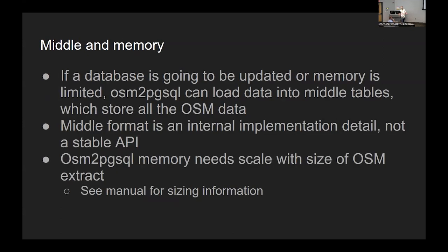This is a lightning talk, so briefly: there's a part of OSM2PGSQL called the middle, which is where temporary data is stored. It's an internal implementation detail that's actually changing fairly soon. OSM2PGSQL memory needs to scale with the size of OSM extract. You're dealing with outputting a couple hundred gigs of data for the planet. You aren't going to do that on a machine with one gig of RAM, or at least not if you care about completing it in a reasonable amount of time.